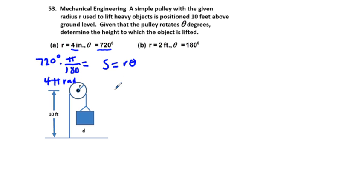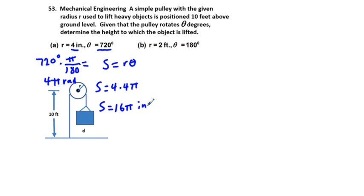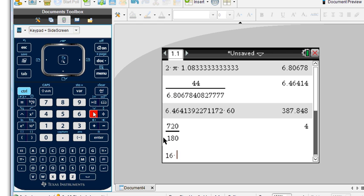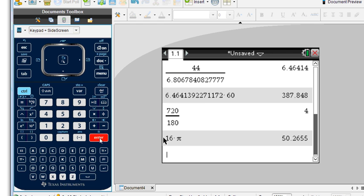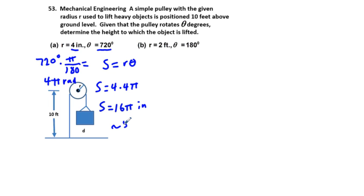With s = rθ, and r = 4 inches, θ = 4π radians, we get s = 4 × 4π = 16π inches. That's the height to which the object is lifted, which is approximately 50.27 inches — about 50.3 inches.